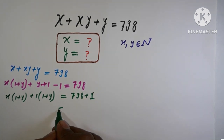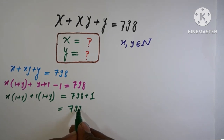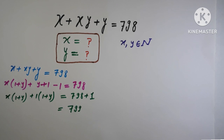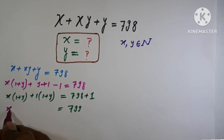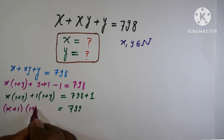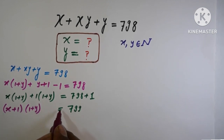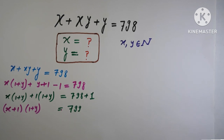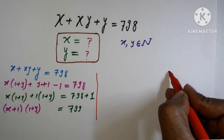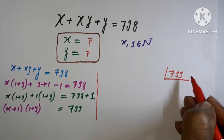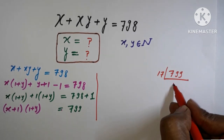This factorizes to (x plus 1)(y plus 1), and the minus one moves to the right side, giving us (x plus 1)(y plus 1) equals 799. Now we need to factorize 799, and 799 can be factorized as 17 times 47.